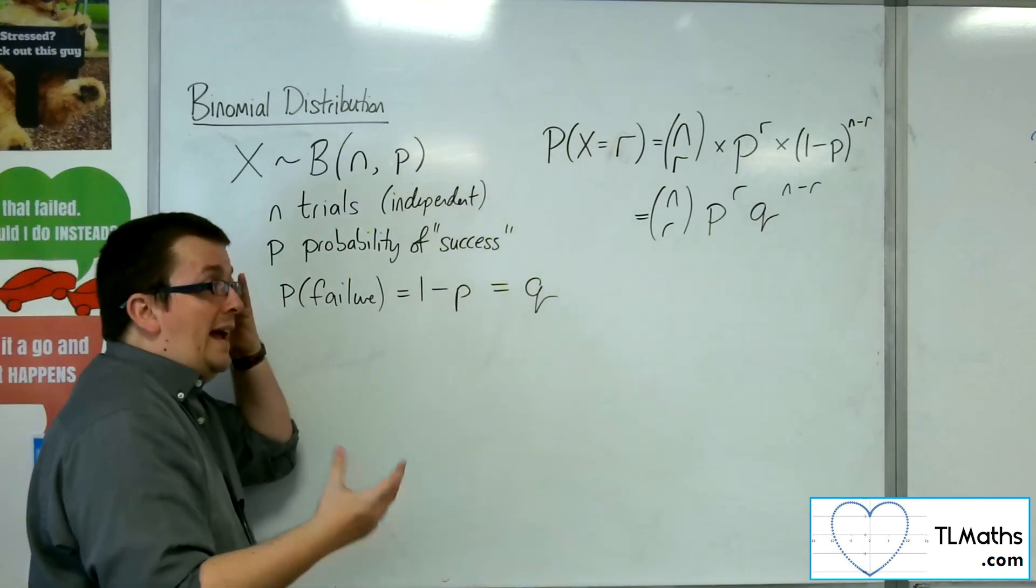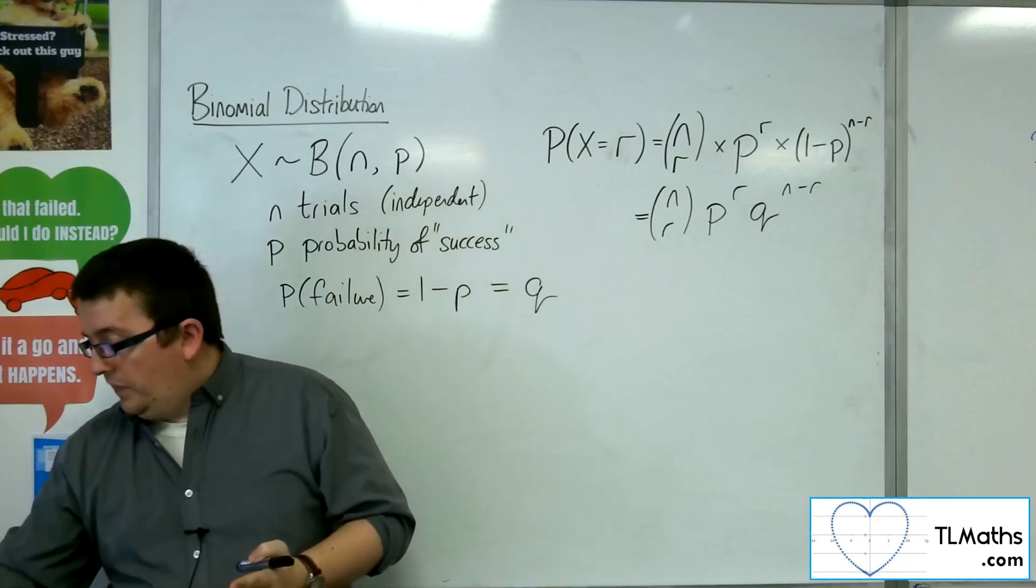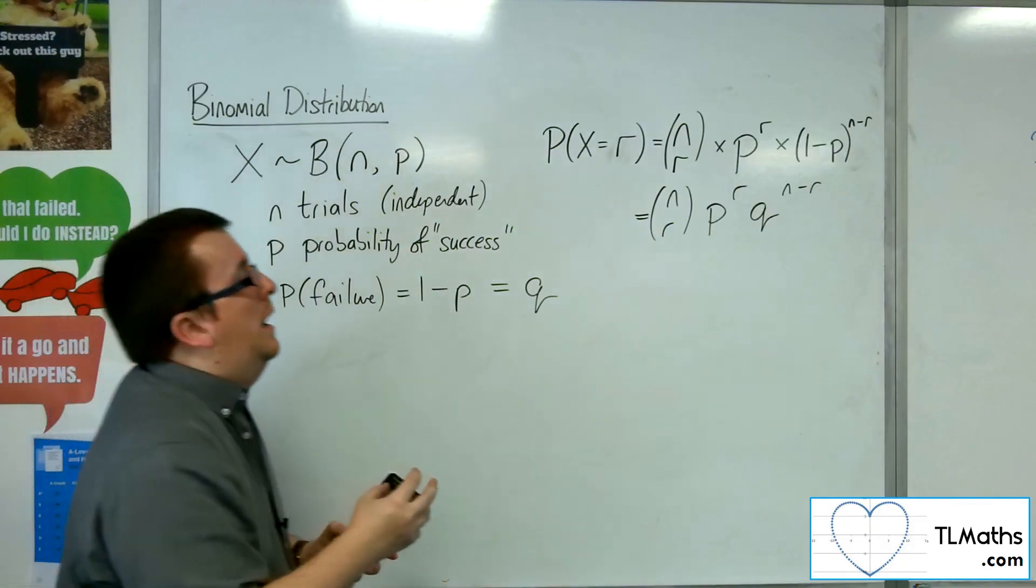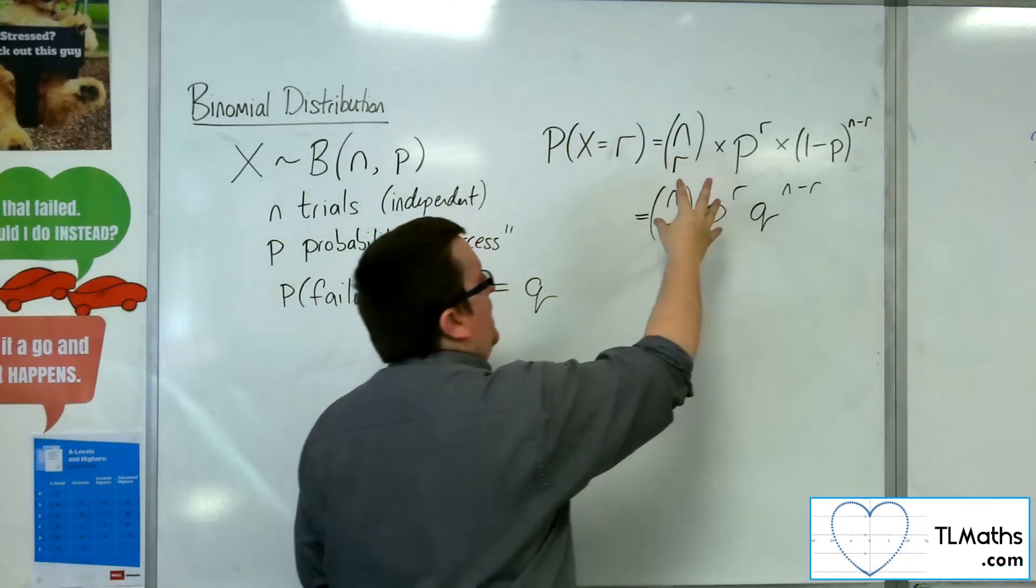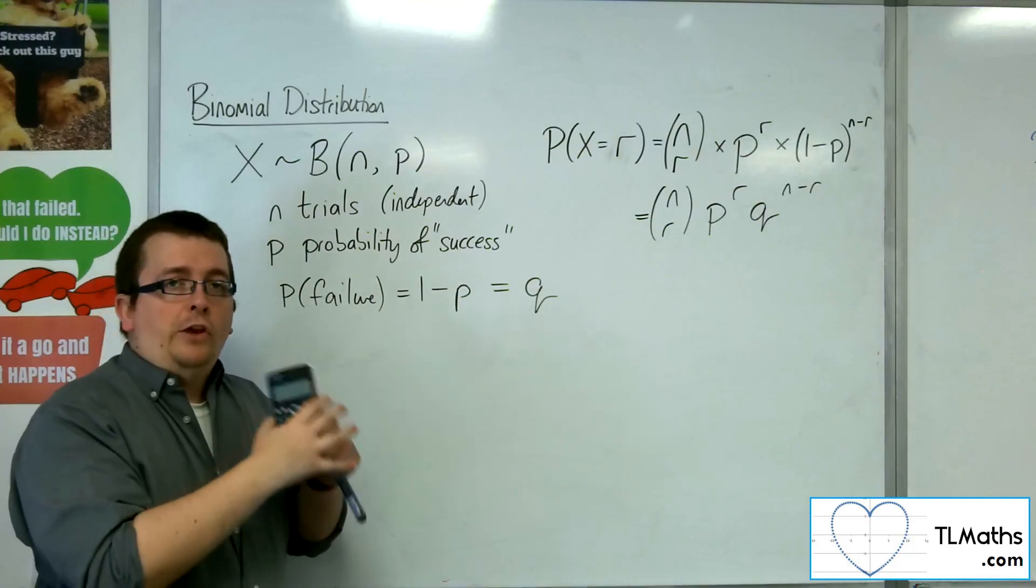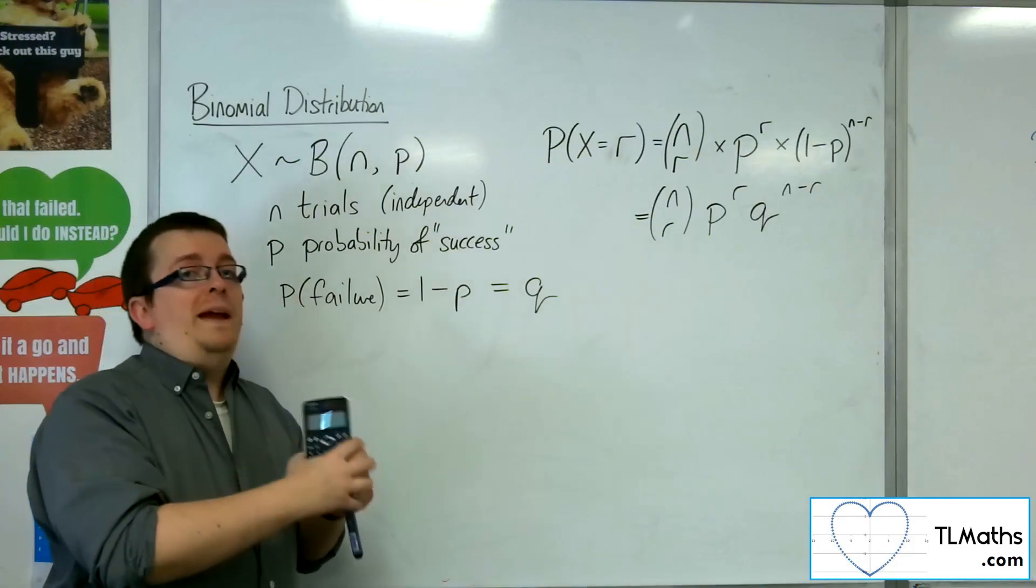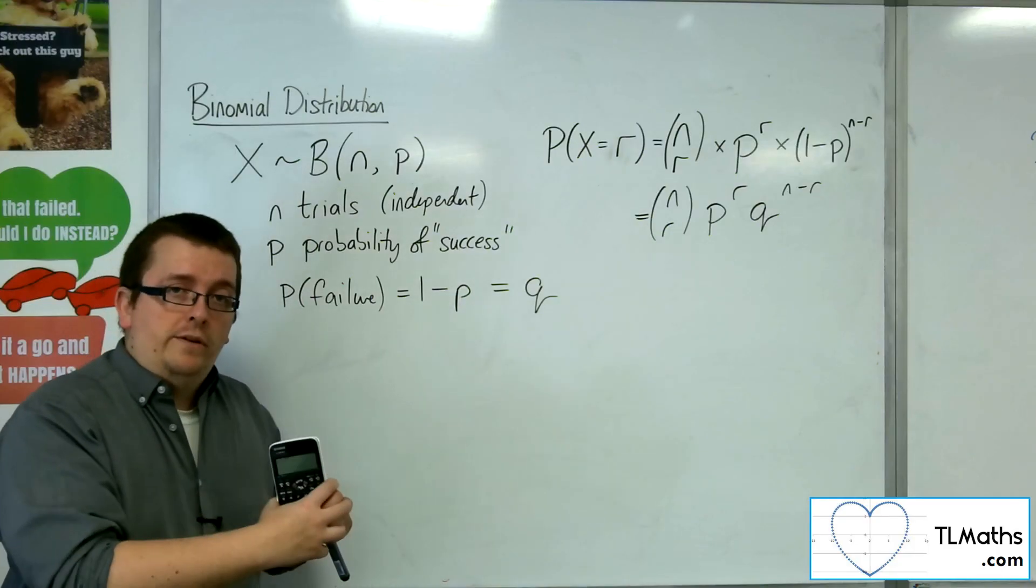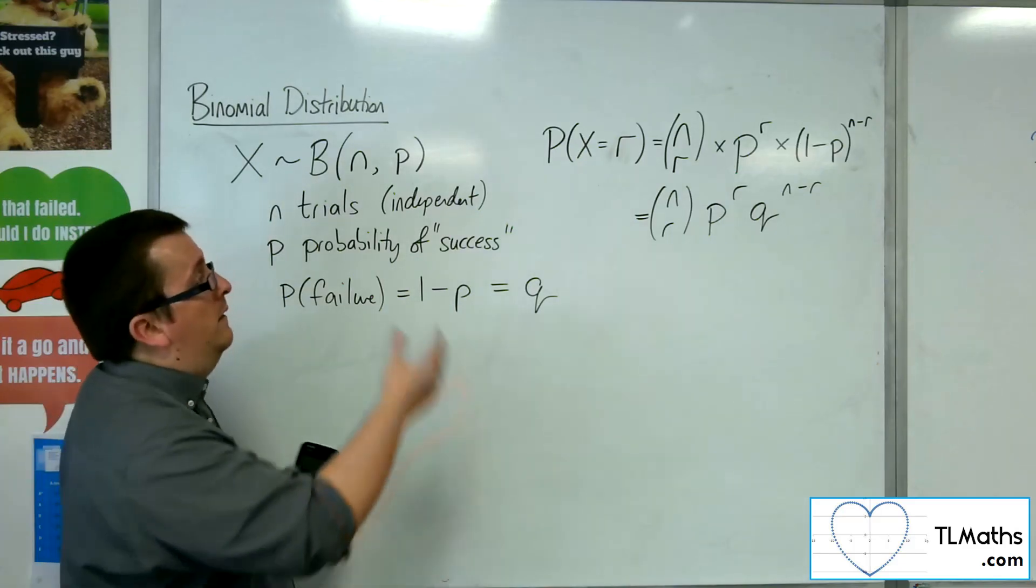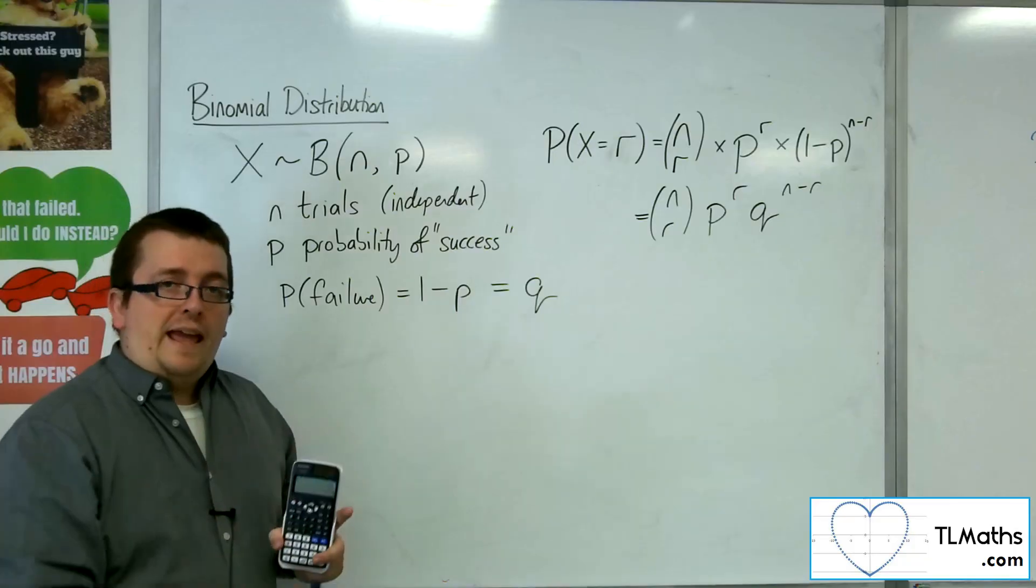Now, your calculator, the Casio ClassWiz, can circumvent the formula. And so you can find exact values of the probabilities using your calculator, and you'll be expected to use your calculator in order to do it. To fully understand where that's coming from, it is using this formula in order to get there.